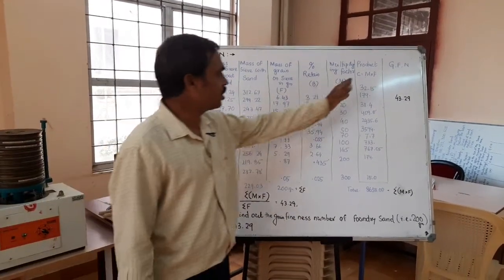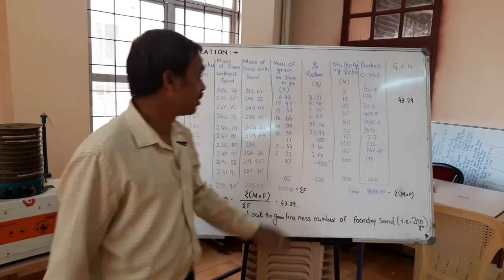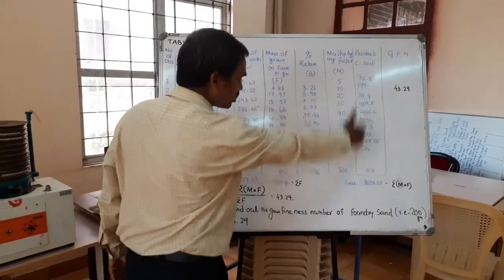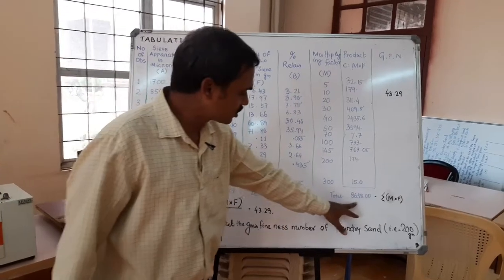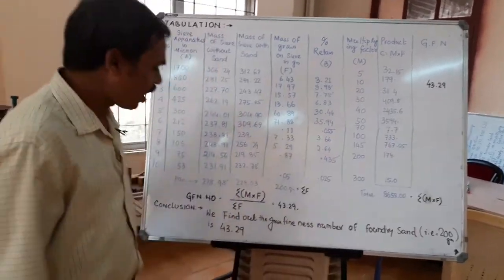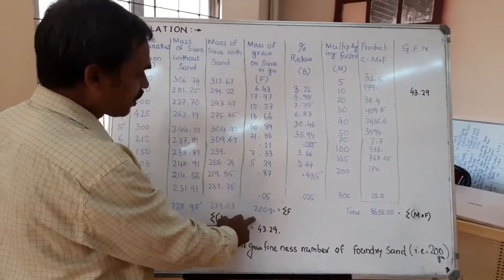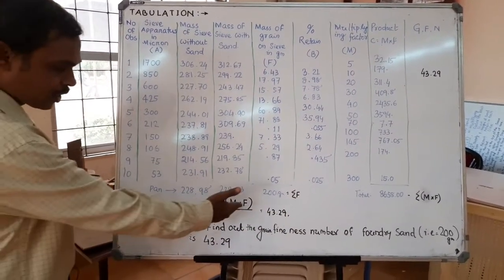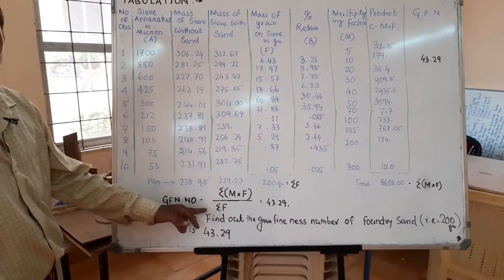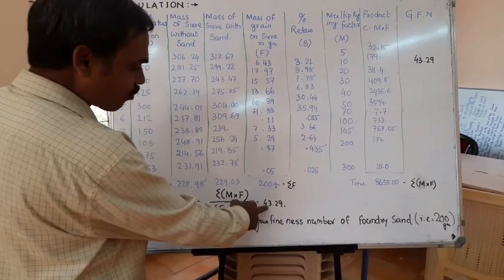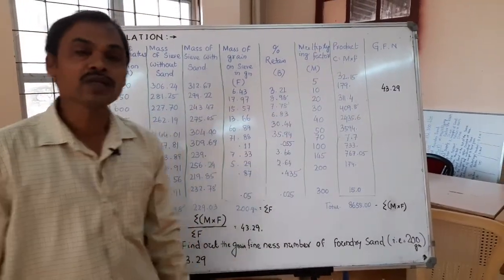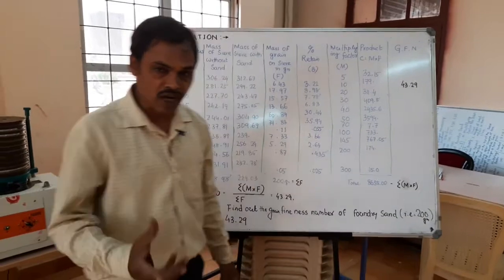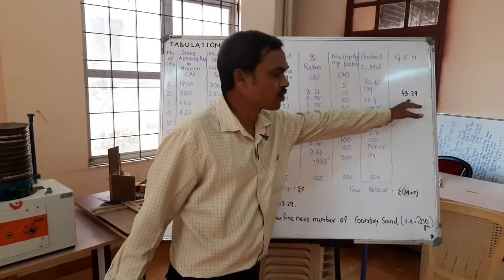Finally, we find out the product of m and F — that is, the multiplying factor m multiplied by F, the mass of grain size in each sieve. We compute the summation of m into F and the summation of F. The fineness number formula is: summation of m×F divided by summation of F. After calculating, we find the GFN number is 43.29 for 200 grams of foundry sand.